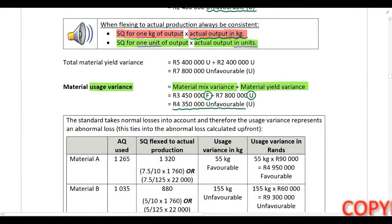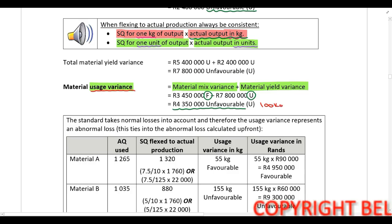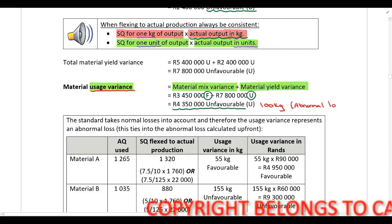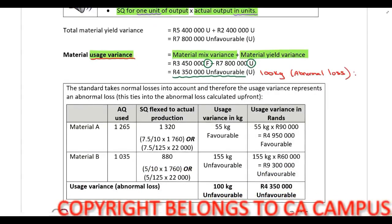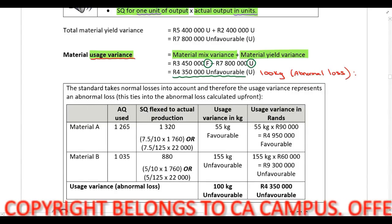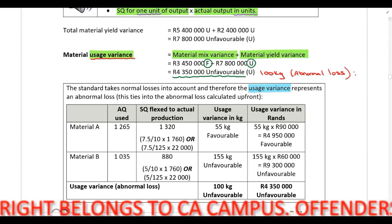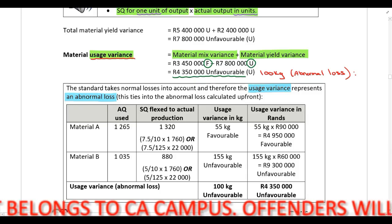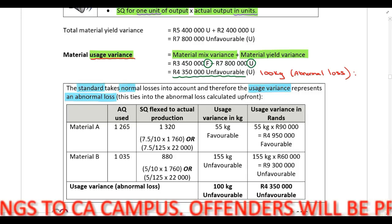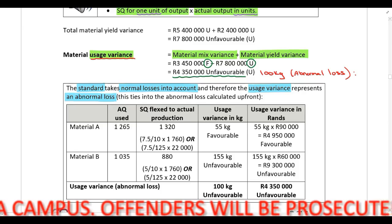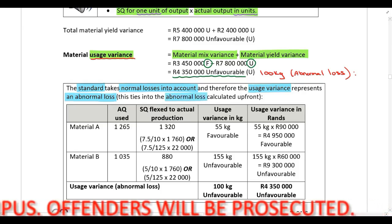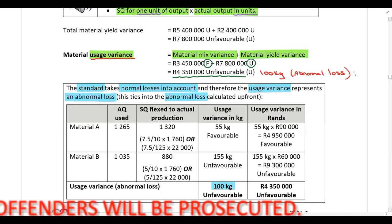I'm going to prove that this usage variance is your abnormal loss of 100 kilograms that we calculated up front. The calculation below shows that the usage variance represents an abnormal loss — not the normal loss — because your standard takes normal losses into account. All of this ties back to the previous calculations where we calculated the abnormal loss to be 100 kilograms.